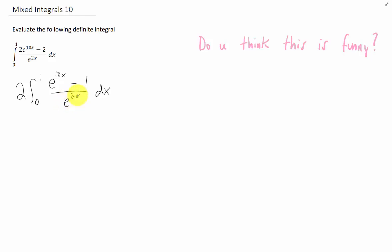If I choose e to the 2x as my u, then I better have an e to the 2x somewhere else in the integral for my du. The same is true for e to the 10x, but neither one of these is the case. So I think we have to be a little bit sneaky here and notice that we can split this numerator up into two pieces.